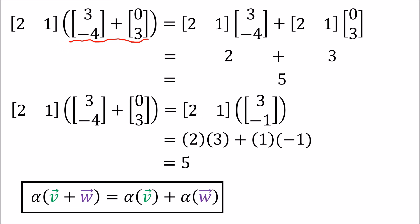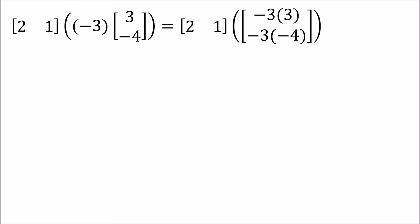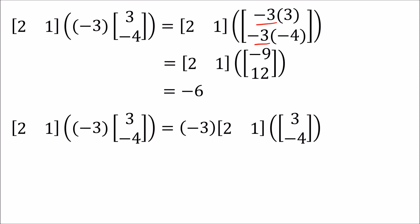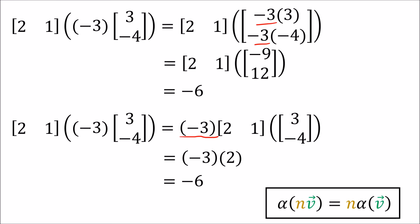Another idea is what if the vector input is scaled by some number. Again, there are two ways to compute the output. We can scale the input vector and then have the row vector act on the result. Or we can put the scaling number out in front and then scale the result of the row vector acting on the column vector. Either way, we get the same result. So row vectors as functions have the property that we can scale the input or scale the output and we get the same result.